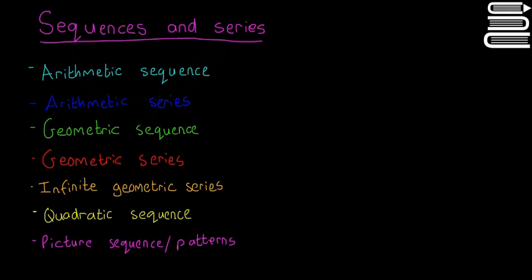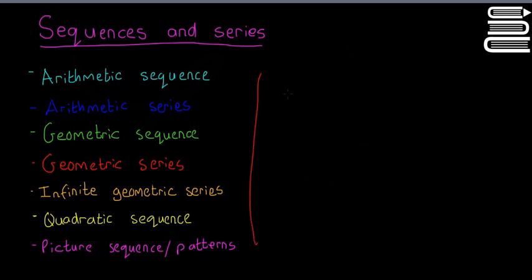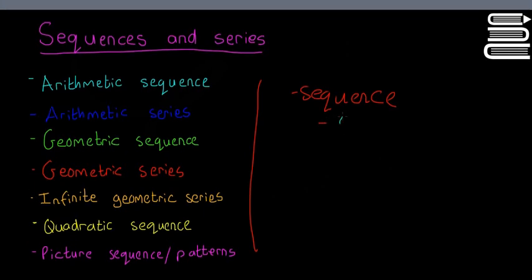They sound more complicated than they are. The first thing we're going to look at is a sequence. What is a sequence? We need to know the difference between a sequence and a series. So a sequence, the most basic definition is just a list of numbers. Normally a rule governs this, so it's not just a random list but one number coming after another or something like that.